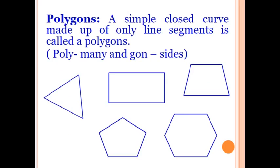What do you mean by polygons? A simple closed curve made up of only line segments is called a polygon. Poly means many and gon means side. Polygons are the closed figures bounded by line segments. These are the figures of some polygons.